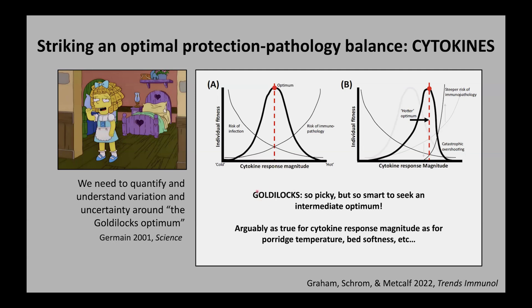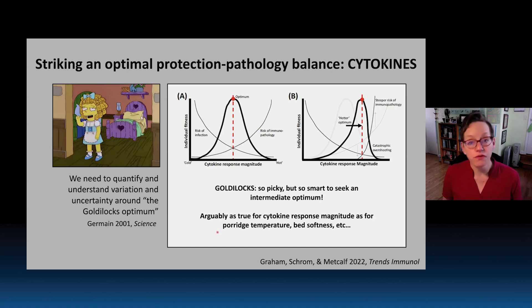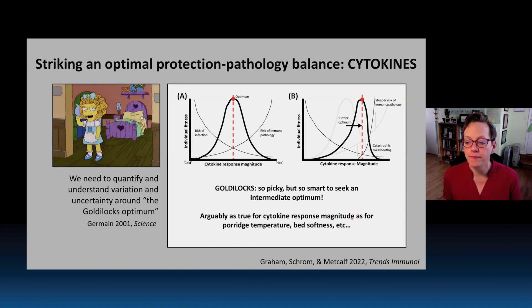Goldilocks was very picky, but it's very smart to seek an intermediate optimum when there are dangers posed by both extremes — extreme risk of infection versus immunopathology. You could arguably say it's as true for cytokine responses as for porridge temperature, bed softness, and the other things Goldilocks was worried about.